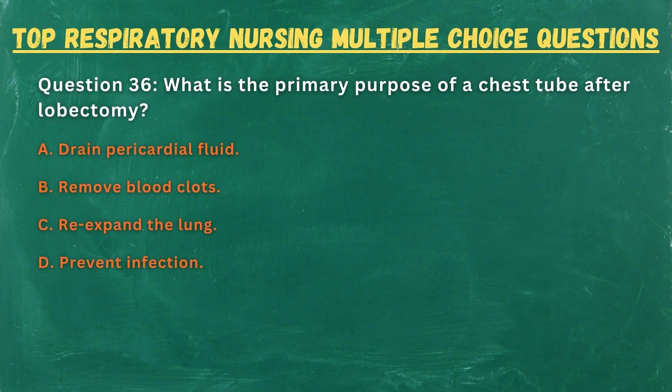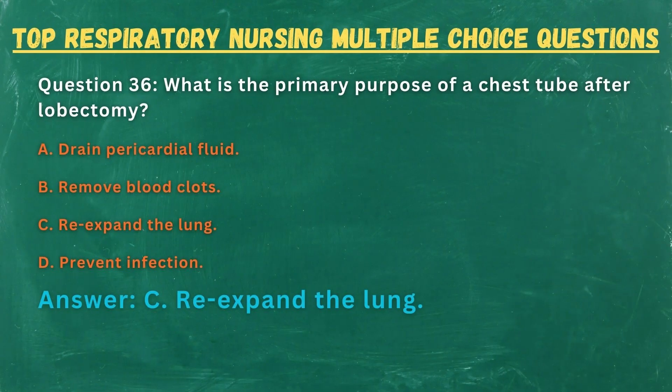Question 36. What is the primary purpose of a chest tube after lobectomy? A. Drain pericardial fluid. B. Remove blood clots. C. Re-expand the lung. D. Prevent infection. Answer: C. Re-expand the lung.